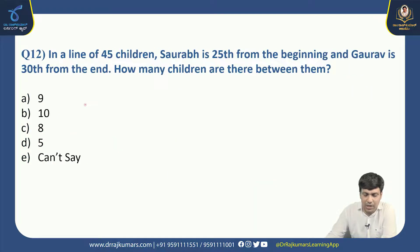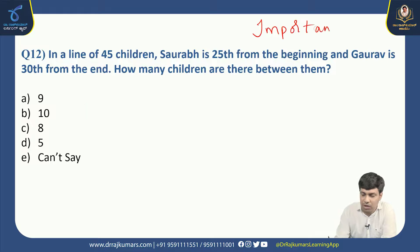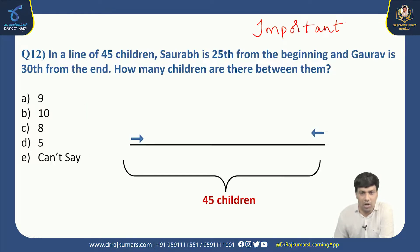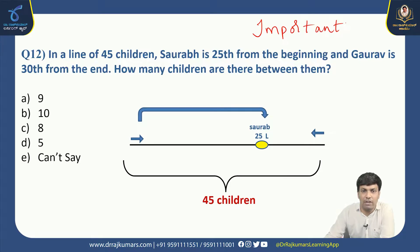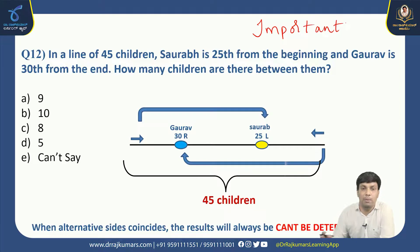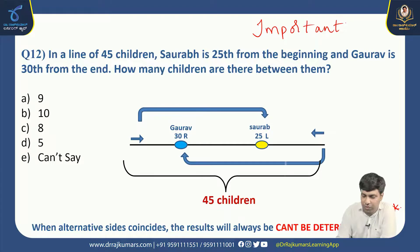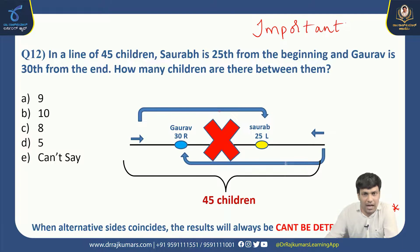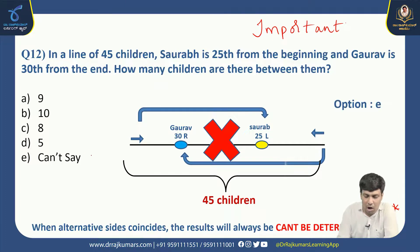Next, an important question: In a line of 45 children, Saurabh is 25th from the beginning and Gauravh is 30th from the end. How many children are between them? Please note: when alternative sides coincide — that is, one rank from the left and the other from the right — the result is always 'can't be determined.' Gauravh's rank is from the right and Saurabh's from the left, so the answer is can't be determined. Right option is E.